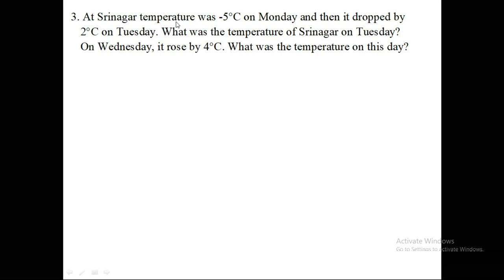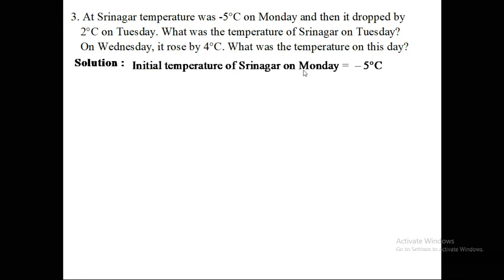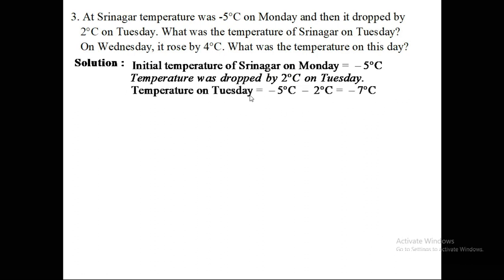Question number three: At Srinagar, the temperature was minus five degrees Celsius on Monday. On Tuesday it dropped by two degrees Celsius. The temperature on Tuesday is: minus five degrees Celsius minus two degrees Celsius. Since both are negative, same signs are added: five plus two equals seven, taking the common sign minus, giving minus seven degrees Celsius on Tuesday.